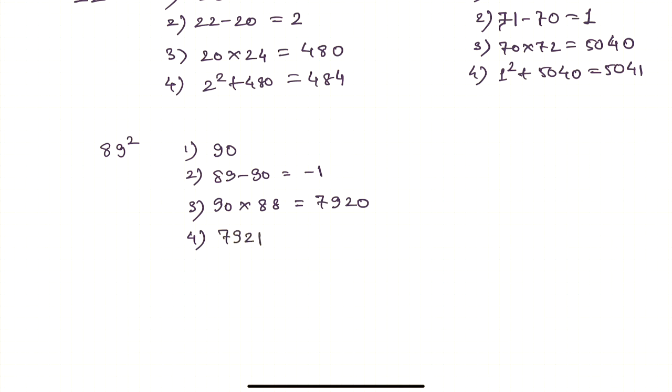Another example, let's say we have to find out 78 square. First step is 80, second step is minus 2, third is 80 into 76 which is 6080, and then plus minus 2 squared to this 6080 is 6084.